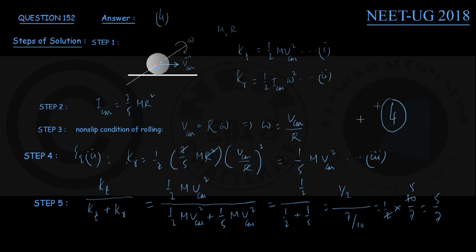So the ratio is 5/7, and the option you choose is option 4. That is the end of this question.